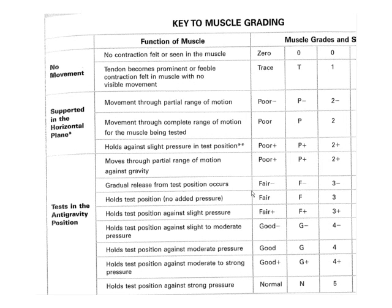We're going to start at the number three — go ahead and find that on the chart. You can see the definition means that they can hold the test position, and on the far left it says 'tests in the anti-gravity position.' Anti-gravity means against gravity. So you've chosen the proper body position — prone, supine, side-lying — and placed the limb into the test position so that the muscle has to hold the weight of the limb against gravity. If the person can do that, they get a three. That result determines whether you go up on the scale and add resistance, or go down and put them into the gravity-eliminated or horizontal plane position.